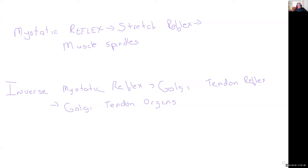What helped me was: there are two words in 'myotatic,' two words in 'stretch reflex,' two words in 'muscle spindles.' There are three words in 'inverse myotatic,' three words in 'Golgi tendon reflex,' three words in 'Golgi tendon organs.' That was how I separated them when studying. If a question asked about myotatic, I knew it was the stretch reflex and the muscle spindles. These can be really confusing, but that mnemonic helped.